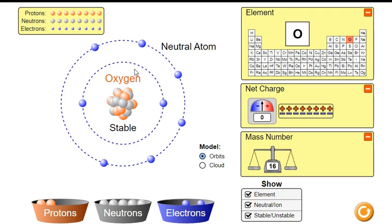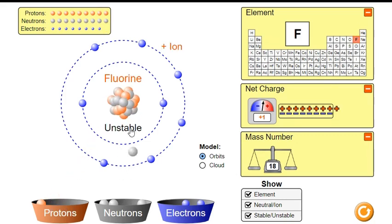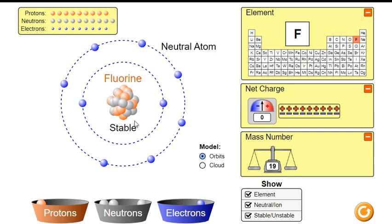There's also no coincidence that if we've got one, two, three, four, five, six electrons in this outermost ring, that oxygen happens to be in the sixth main group on the periodic table. If we go one step further and make a stable, neutral fluorine atom with nine protons and nine total electrons, we've got one, two, three, four, five, six, seven in this outermost ring, and fluorine is in the seventh main group on the periodic table.